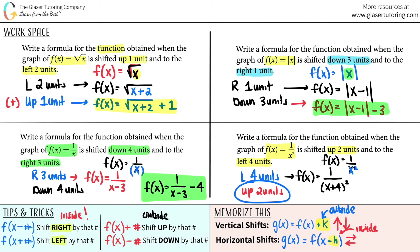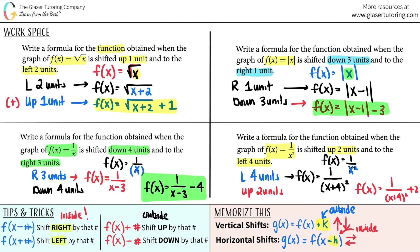Now for the easy part — going up two units is outside the function. We always add that at the end. So f(x) equals 1 over (x plus 4) squared plus 2, because up is always a plus on the outside. This is your new function after all the transformations.